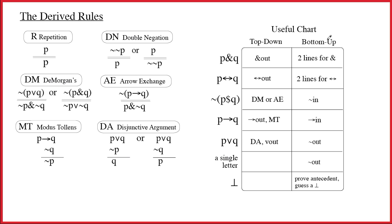I'd say we're more familiar with the bottom-up material than with the top-down, because we've just added a bunch of new top-down things — primarily the derived rules. For instance, if you're stuck at the top and go to the bottom and see an ampersand, you know you do two lines for an ampersand. Or if you see the double arrow, it's two lines for the double arrow. So there's always one unique thing to do bottom-up, based on the main connective.